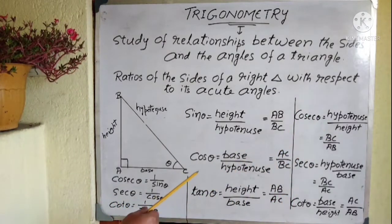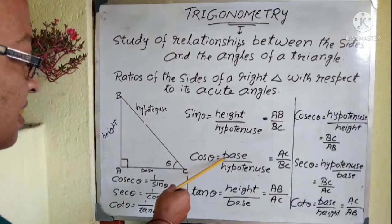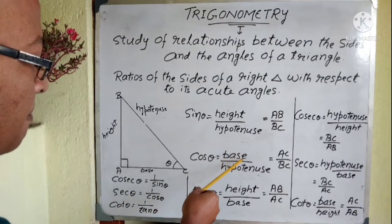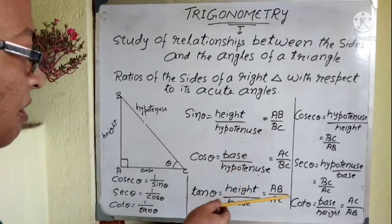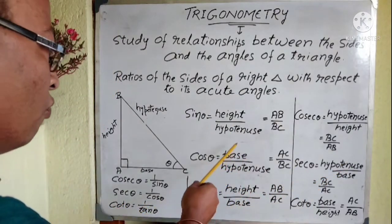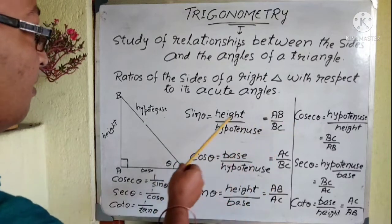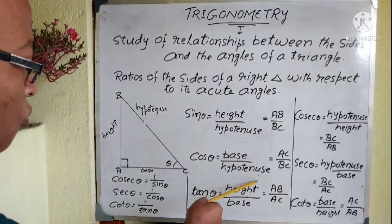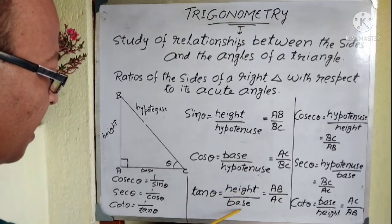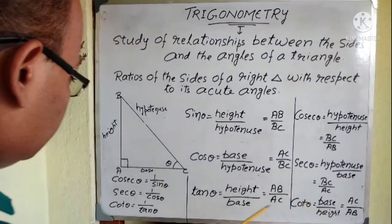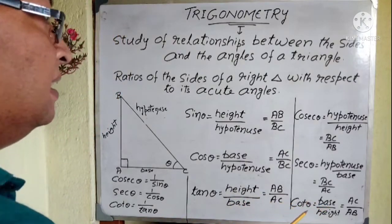Sec theta is 1 by cos theta. Cos theta is base by hypotenuse, so 1 by that gives hypotenuse by base — that is sec theta. Similarly, cot theta is 1 by tan theta. Tan theta is height by base, so 1 by tan theta becomes base by height, which is cot theta.